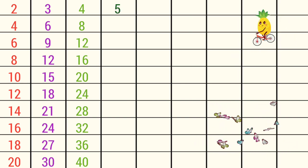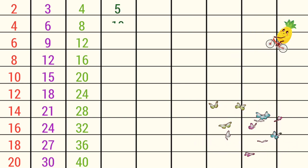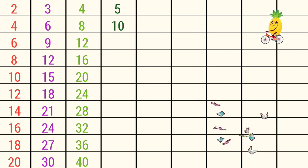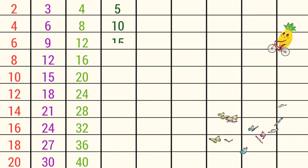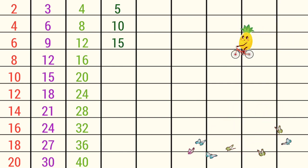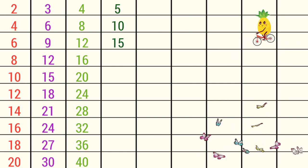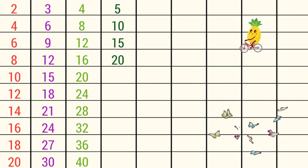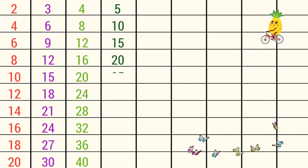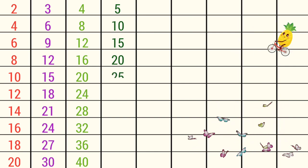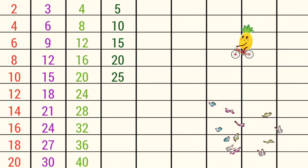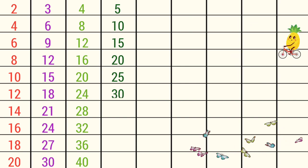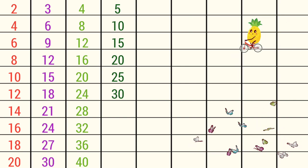5 1s are 5, 5 2s are 10, 5 3s are 15, 5 4s are 20, 5 5s are 25, 5 6s are 30.